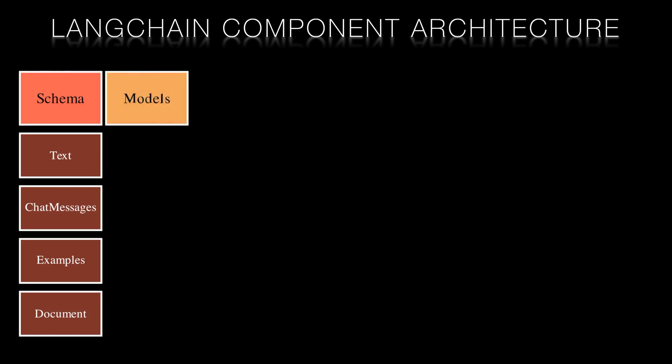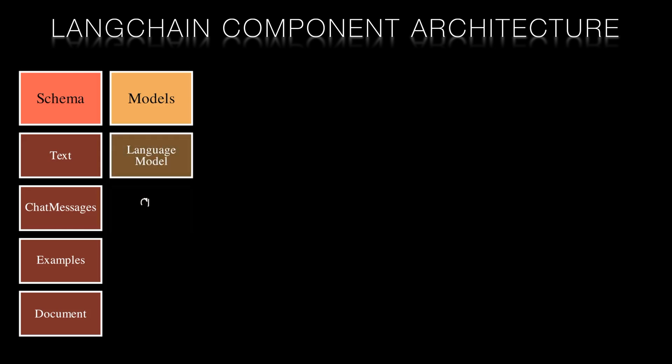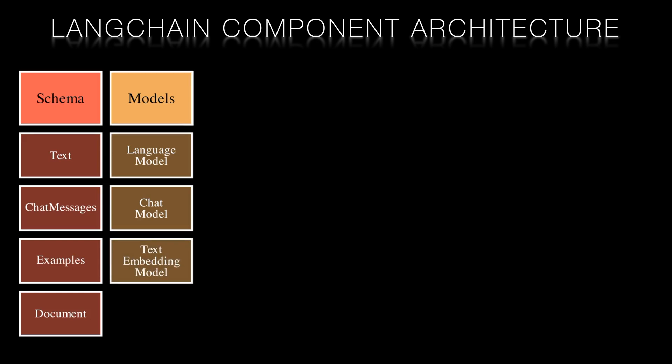Models are the AI engines of Langchain, responsible for text generation, conversation, and text embedding. They include large language models, chat models, and text embedding models. These models work closely with other components such as the schema and prompts to understand inputs, generate meaningful outputs, and provide context for interactions.